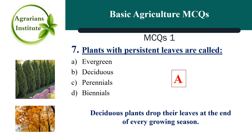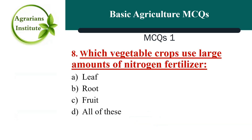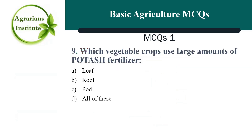Next MCQ: Which vegetable crops use large amounts of nitrogen fertilizer? The correct answer is A, Leaf crops. Next MCQ: Which vegetable crops use large amounts of potash fertilizers? The correct answer is C, Root crops.